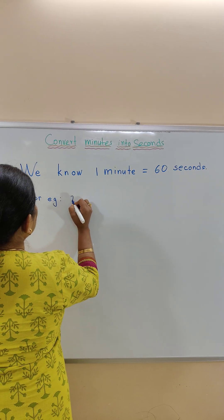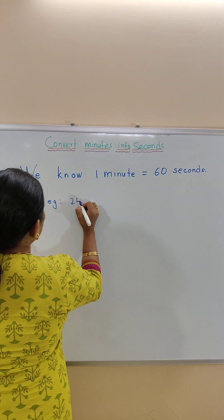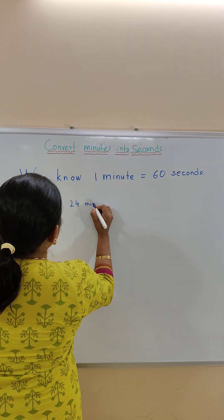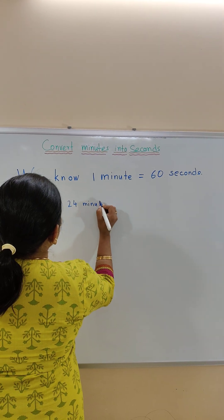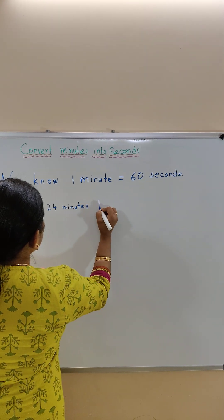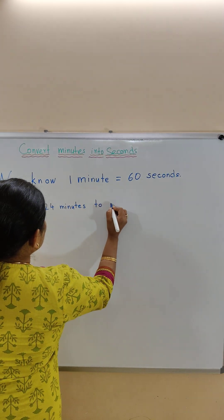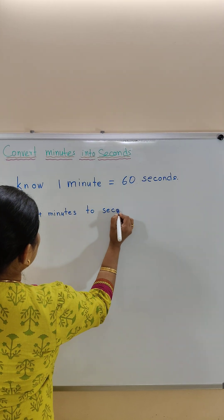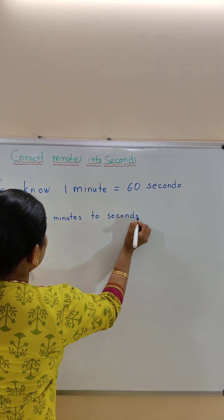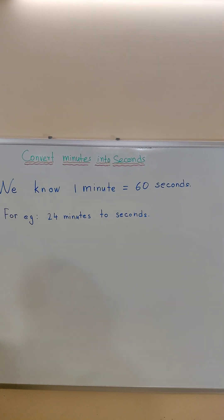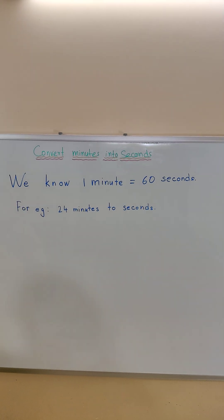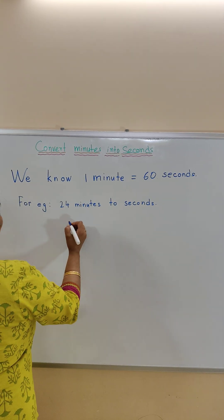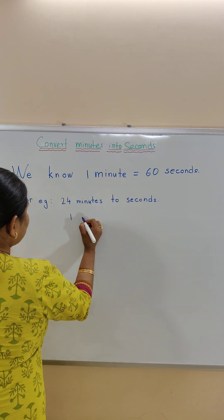For example, to convert 24 minutes to seconds. How will we convert? We know one minute is equal to 60 seconds.